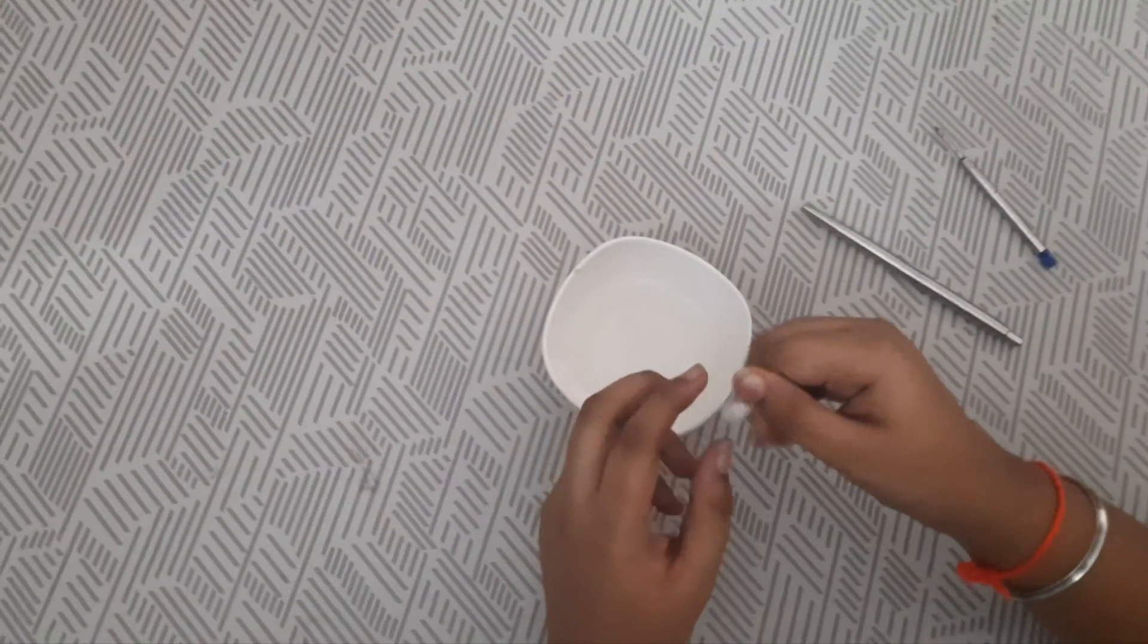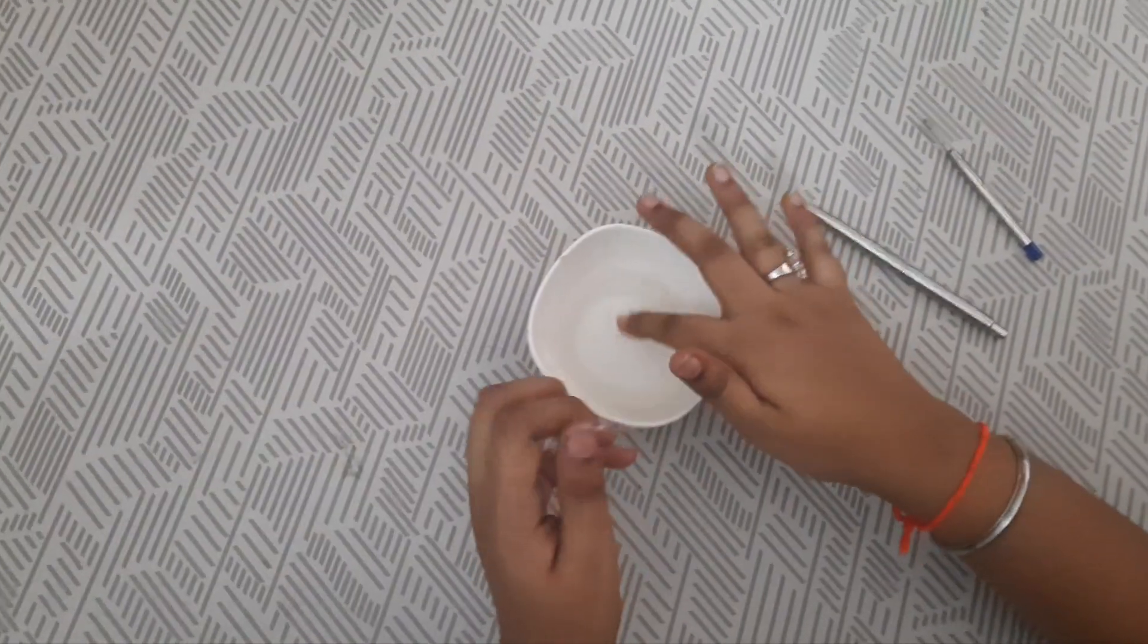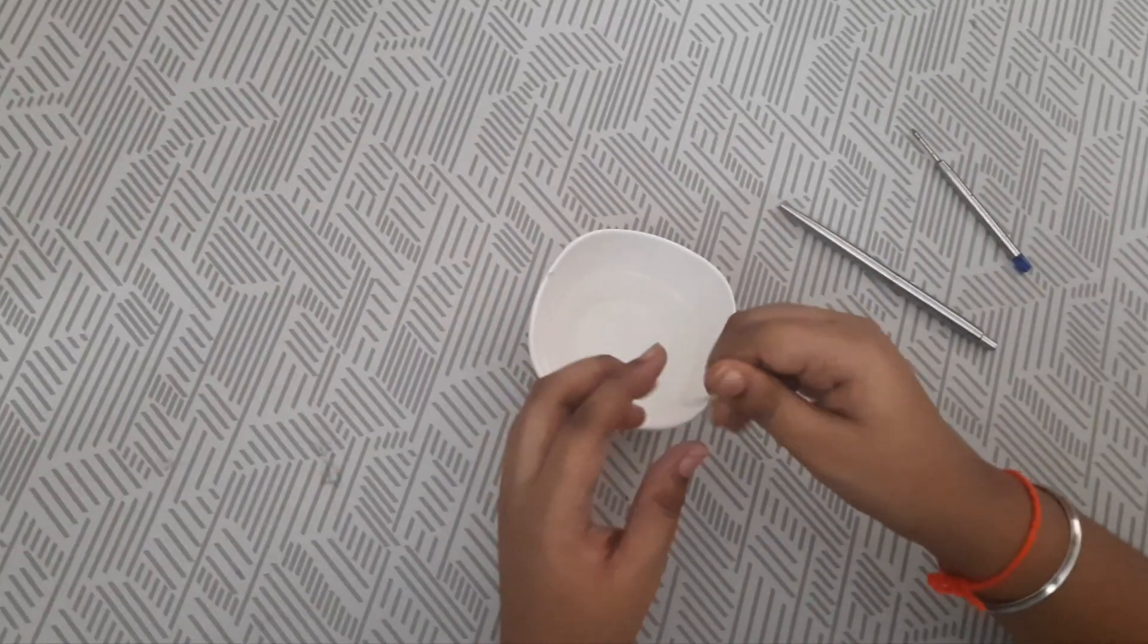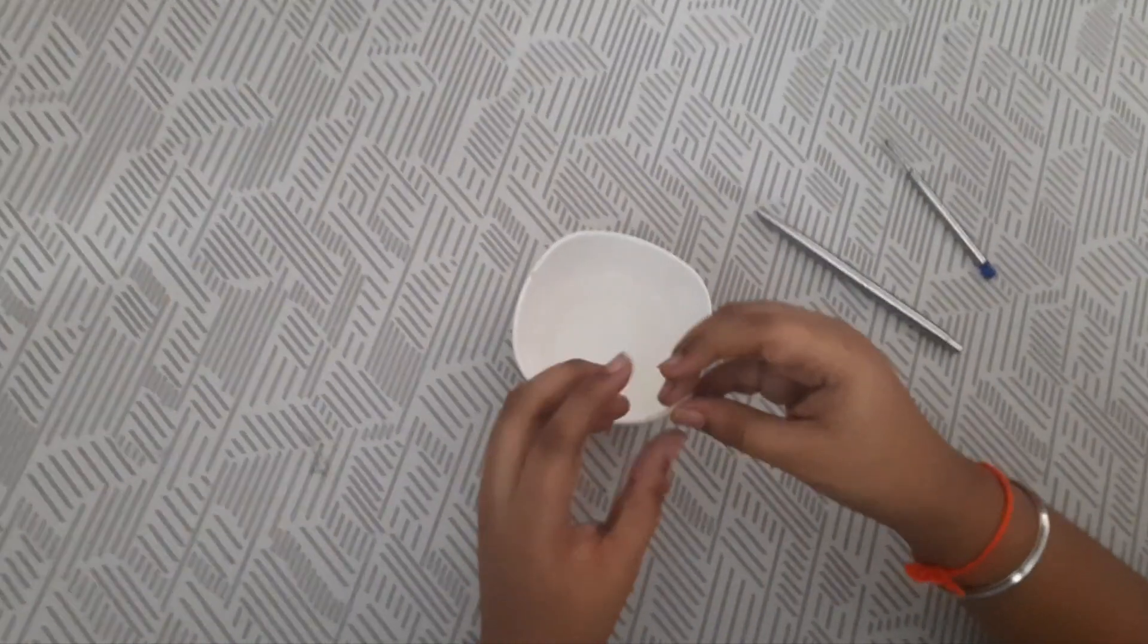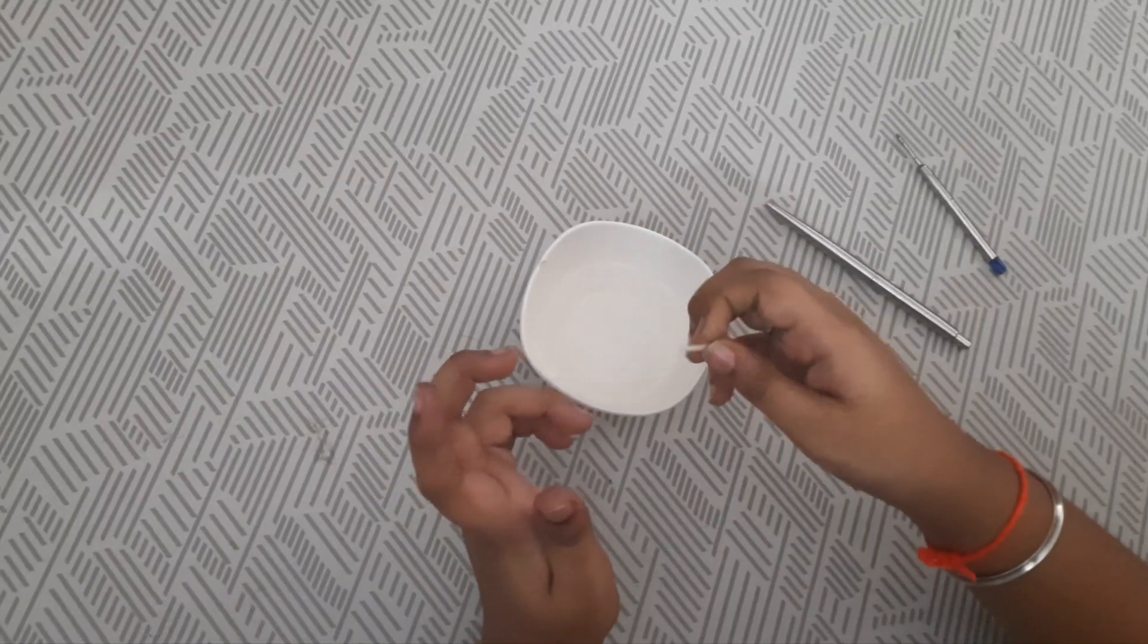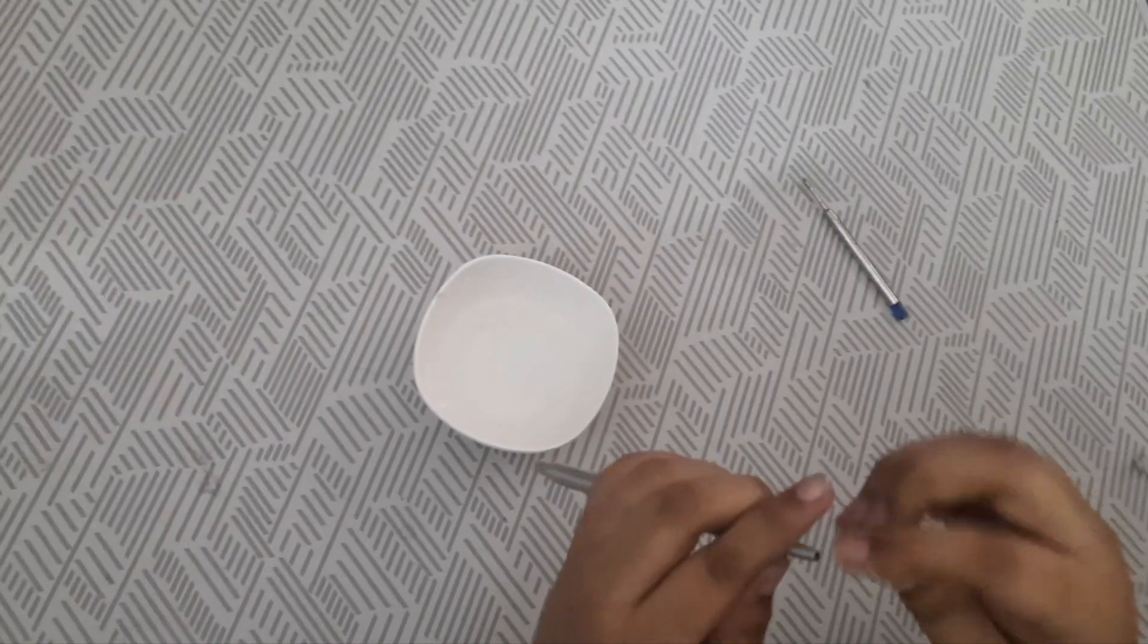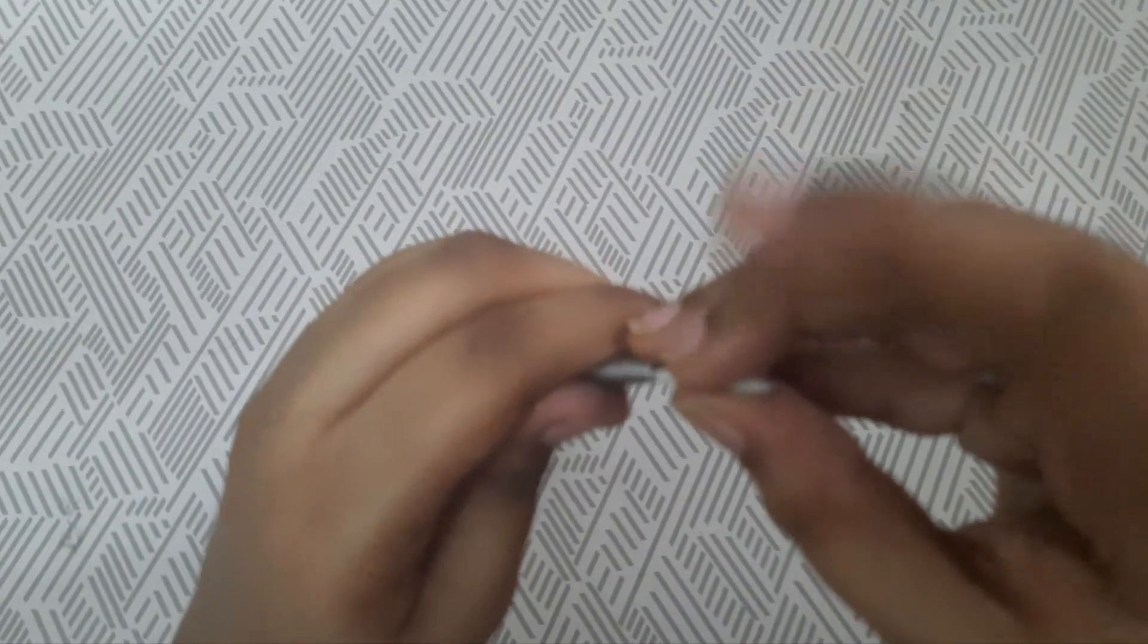You should not dip the cotton into the water directly. Now you need to place the cotton near the lid, inserting it in this way.